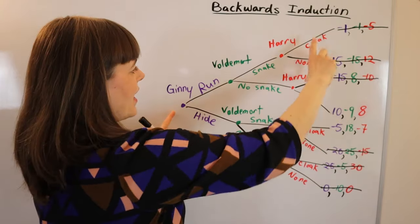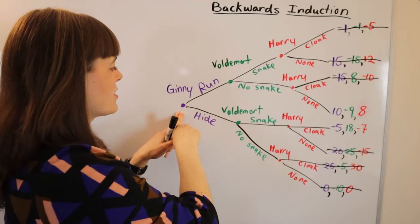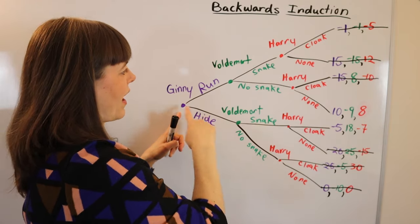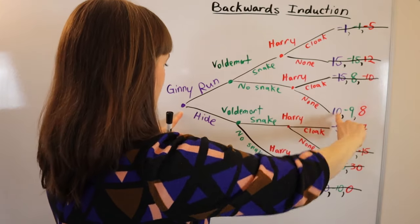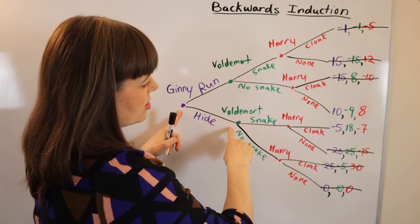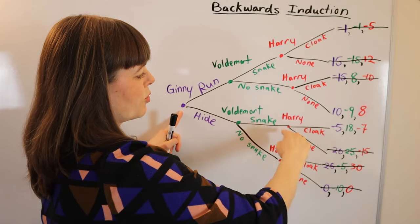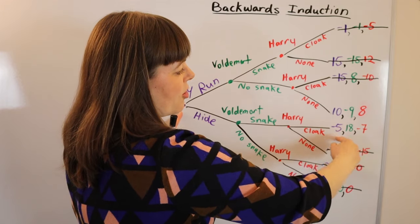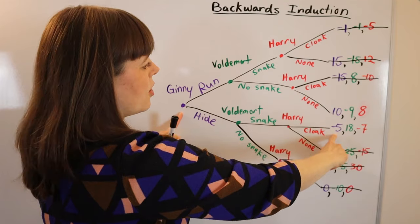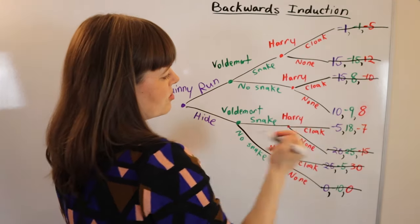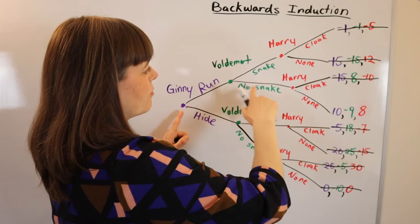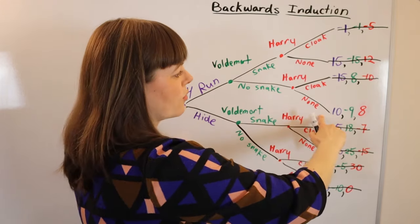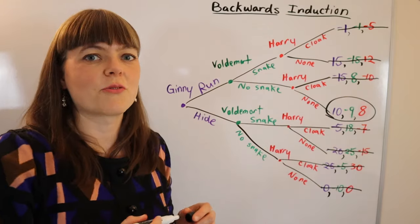Now we're left with two possible end nodes and move back to Jenny's choice: run or hide. If she runs, based on the backwards induction reasoning, she'll get a payoff of 10. If she hides, Voldemort will bring his snake, Harry will bring his cloak, and her payoff will be negative 5. She prefers 10, so she won't choose hide. The solution is: Jenny runs, Voldemort does not bring his snake, and Harry does not bring his cloak.